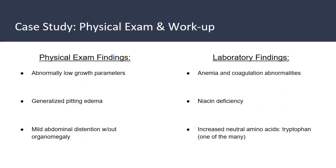Upon initial presentation the physicians did a physical exam and laboratory findings on the patient. Her physical exam findings were abnormally low growth parameters — well below the average growth curve for three-year-olds. She had generalized pitting edema and mild abdominal distension but without organomegaly. Her laboratory findings showed anemia and coagulation abnormalities, a niacin deficiency, and increased neutral amino acids with tryptophan being the majority.